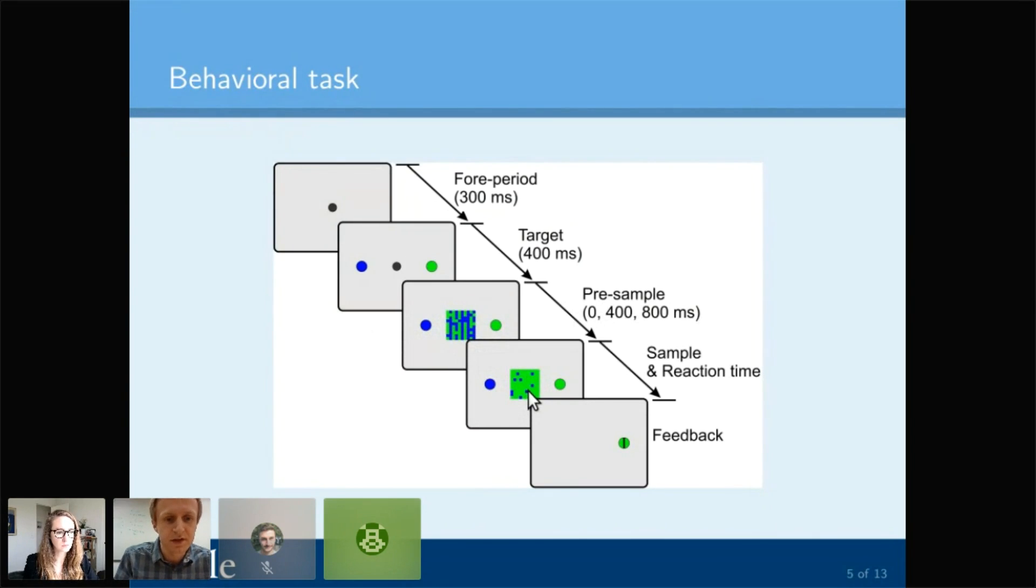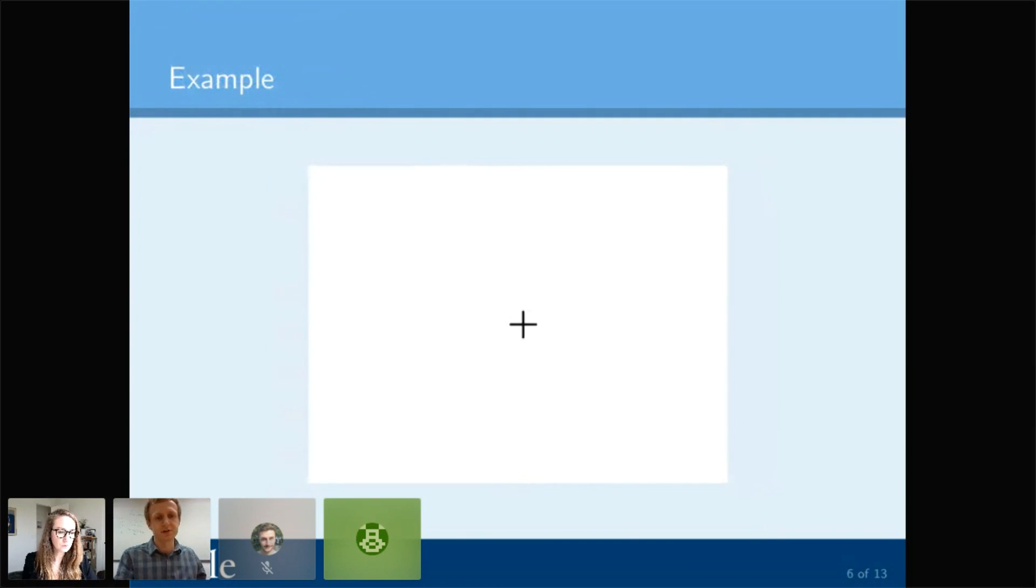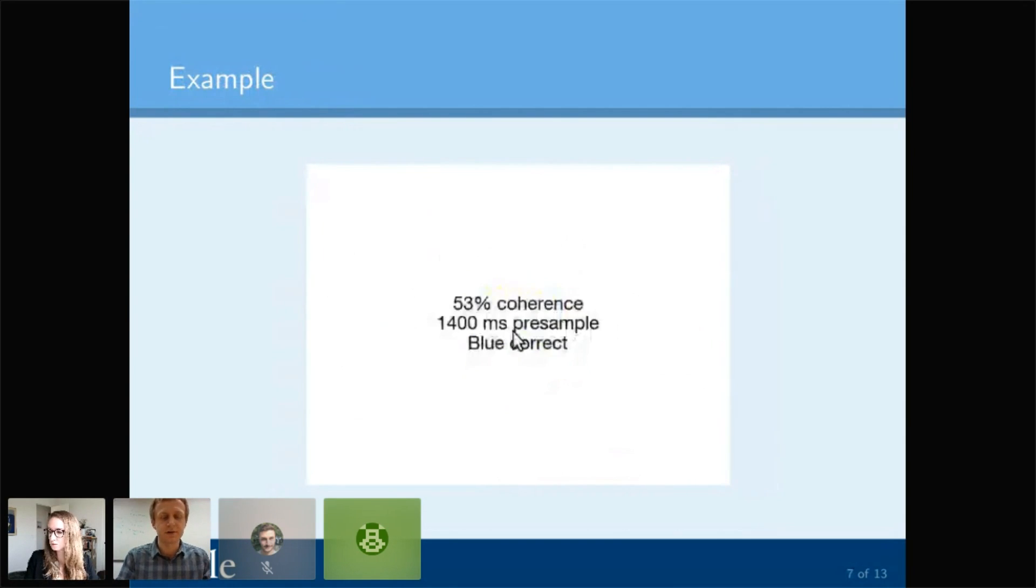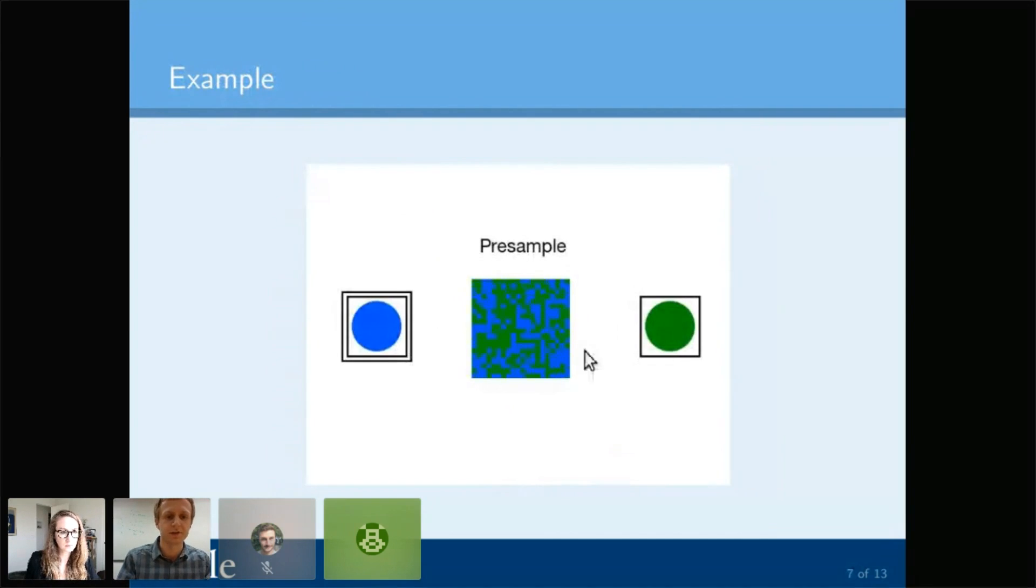There's going to be a change from the pre-sample period where there's no stimulus to the sample period where there is a stimulus. Let me show you a quick movie. First, I'll show you an easy trial and then a more difficult trial. The easy trial changes to a high level of color coherence. There's the pre-sample, and then it swaps. You can see that was easy because there's lots of blue. But they're not always that easy. Sometimes we have hard ones with lower coherence. The monkeys can do better than chance—they're better than I am at this.